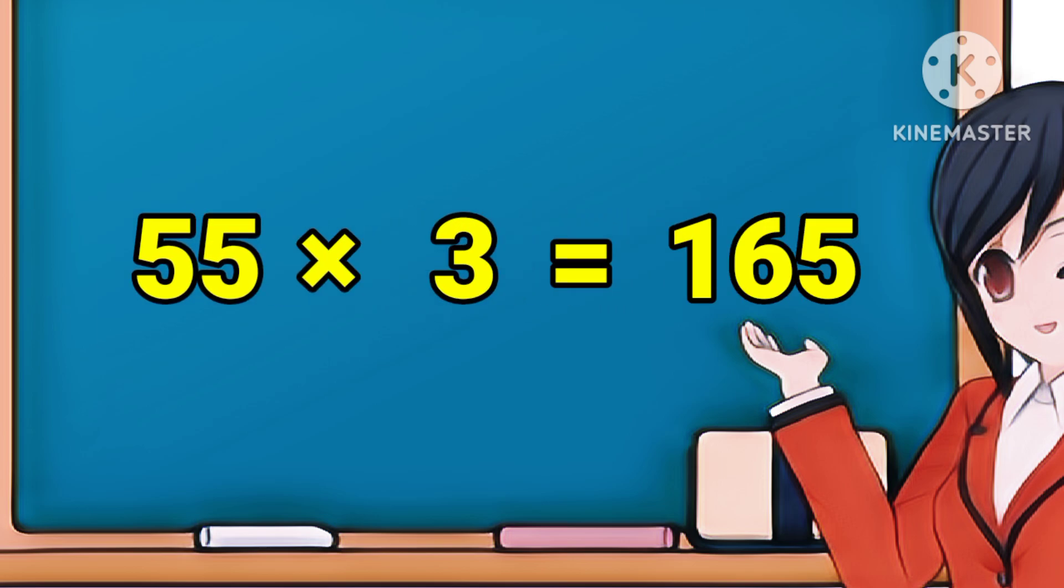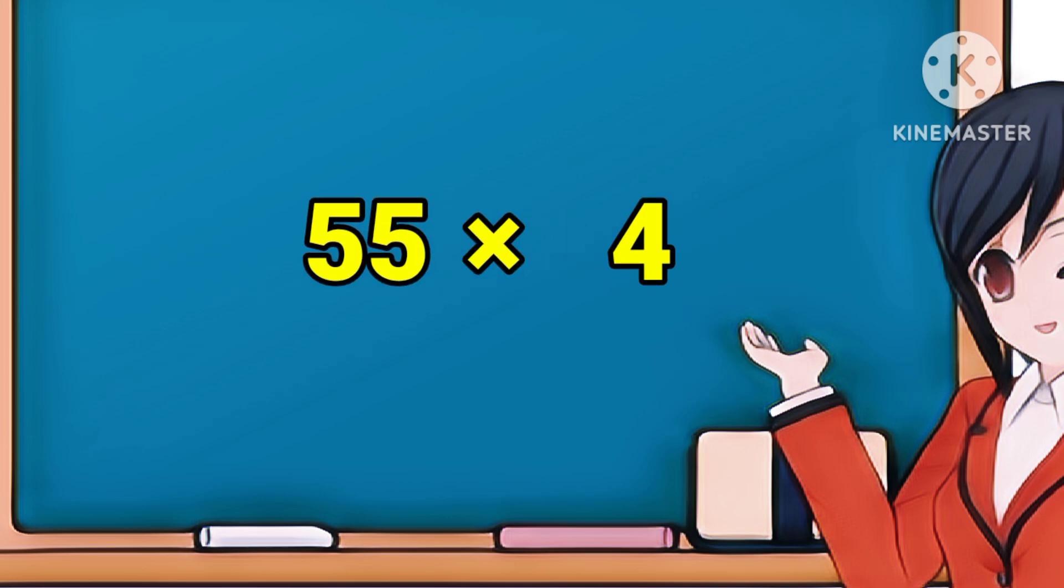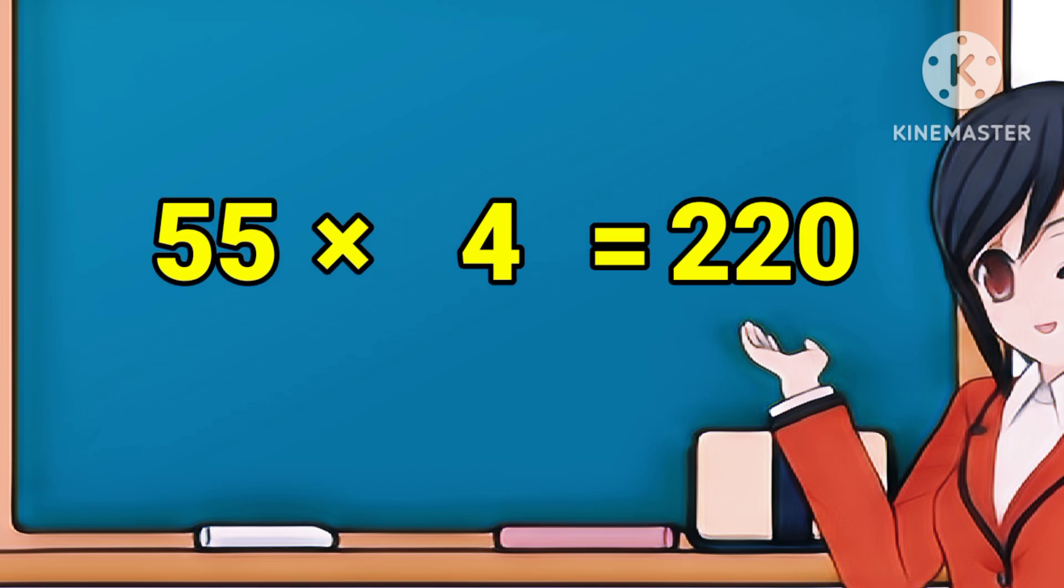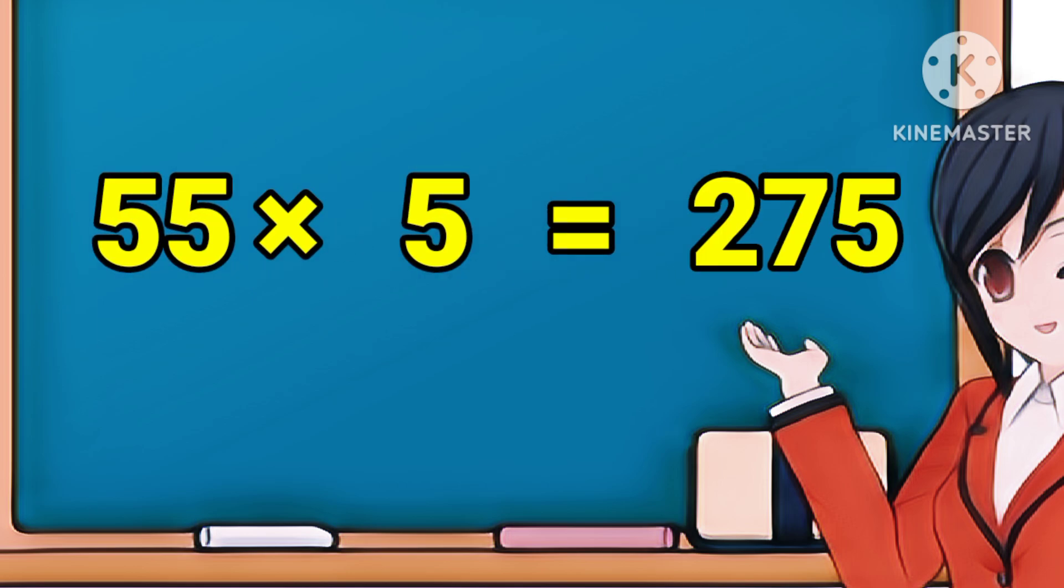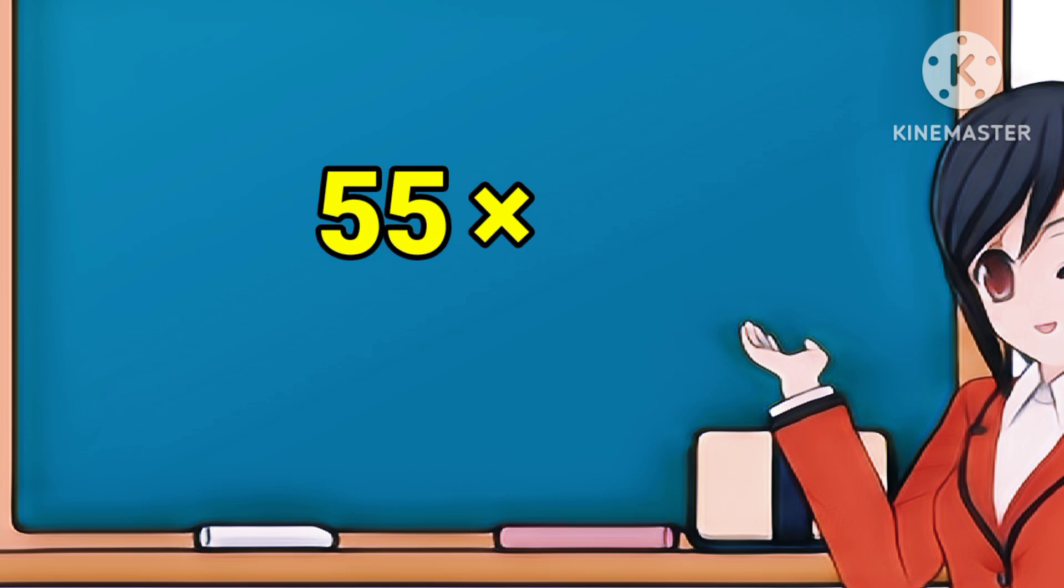55 × 3 = 165. 55 threes are 165. 55 × 4 = 220. 55 fours are 220.